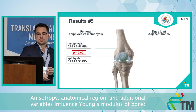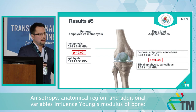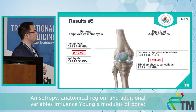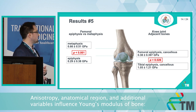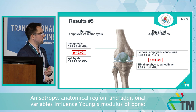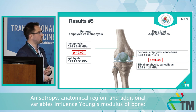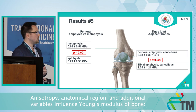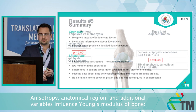Within the same bone, like the femur, the metaphysis and epiphysis have different Young's modulus values. Also, the tibial epiphysis and the femoral epiphysis show almost two to three times difference in Young's modulus.